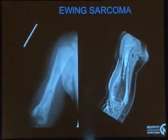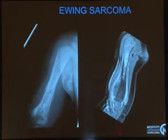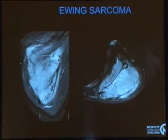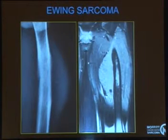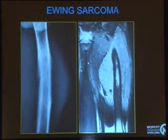Here's a classic Ewing sarcoma in a two-year-old child. You can see the permeative appearance in the bone, the onion skinning, the broken periosteal reaction line, and a large soft tissue mass. Ewing sarcoma also occurs more commonly in flat bones than osteosarcoma. Here you see a large Ewing sarcoma of the scapula, and another example in the diaphysis showing the large soft tissue mass and permeative appearance — you really can't tell where this tumor starts and stops.